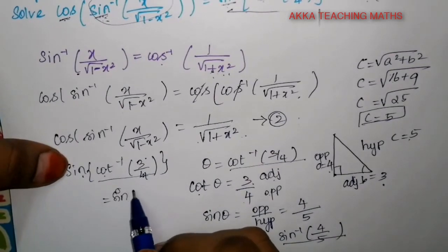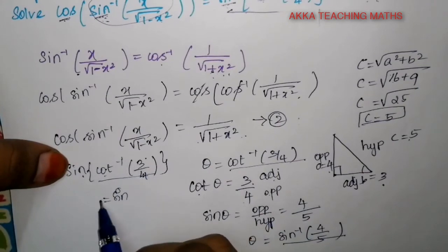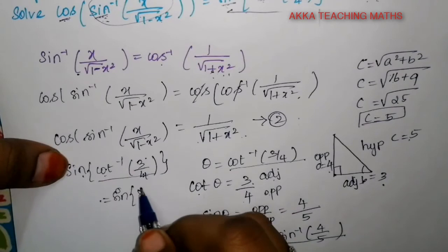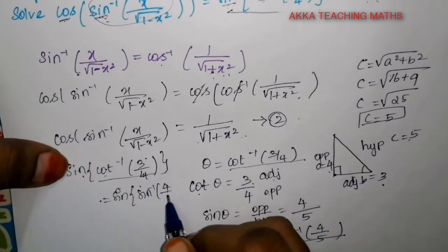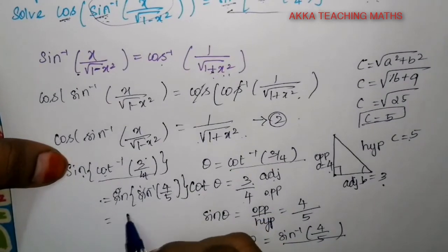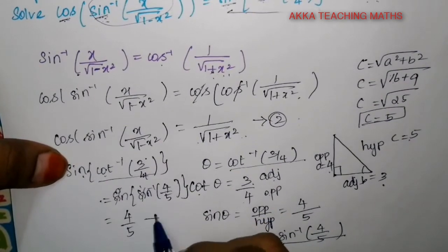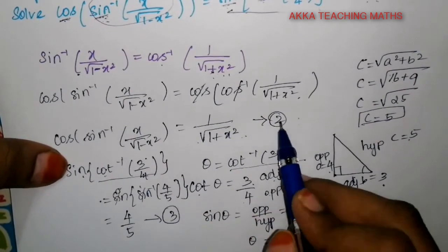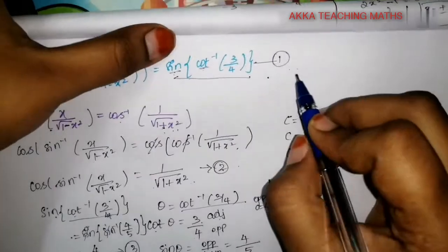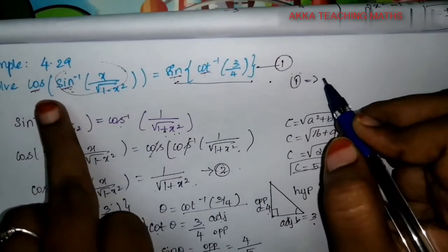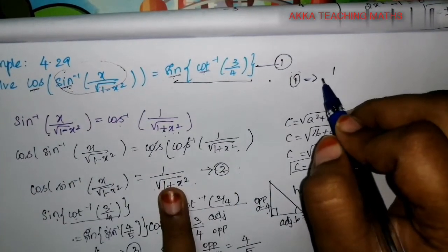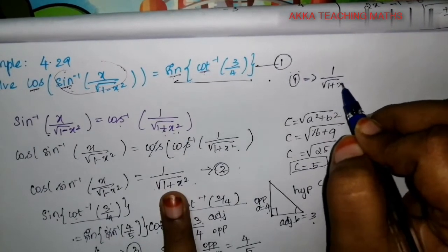So cot inverse of 3 by 4 is equal to sin inverse of 4 by 5. This is equation 3. So using equations 2 and 3, we substitute into the first equation. This gives us: cos of sin inverse of 1 by root of 1 plus x square equals sin inverse of 4 by 5.